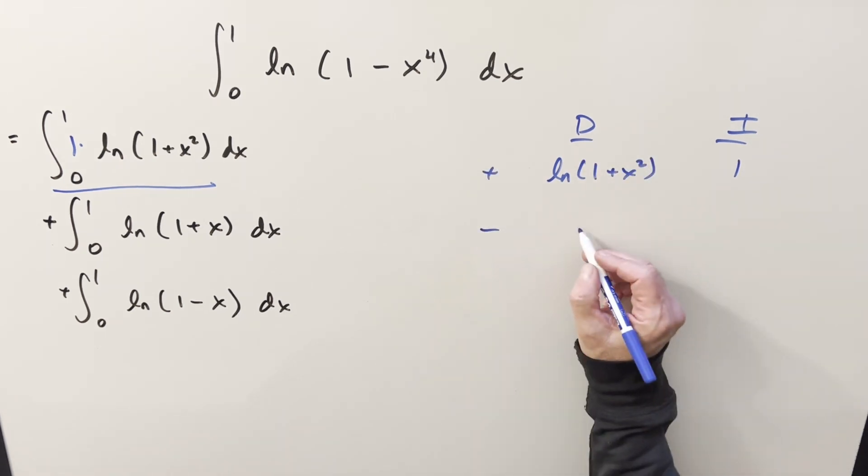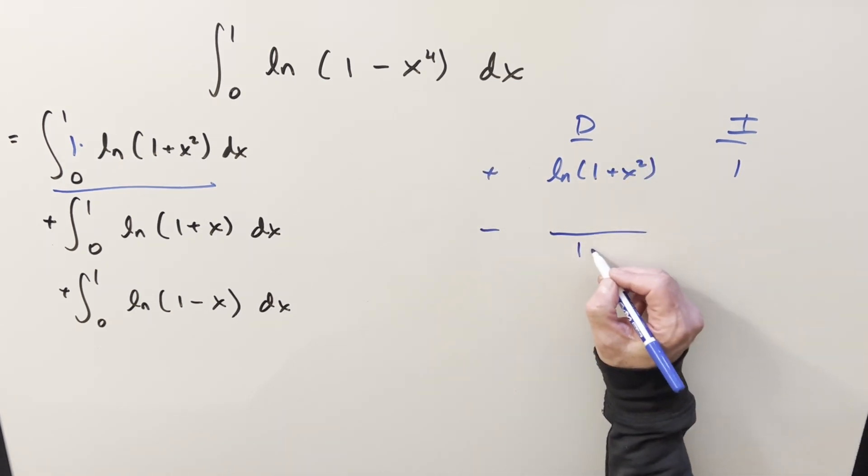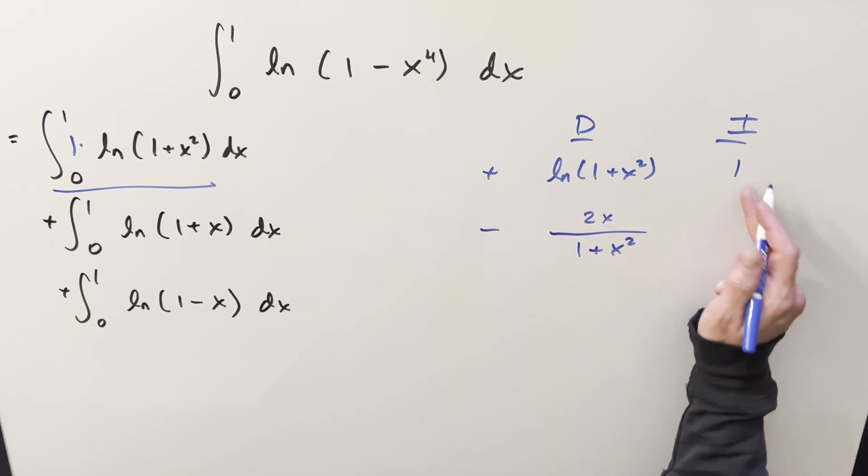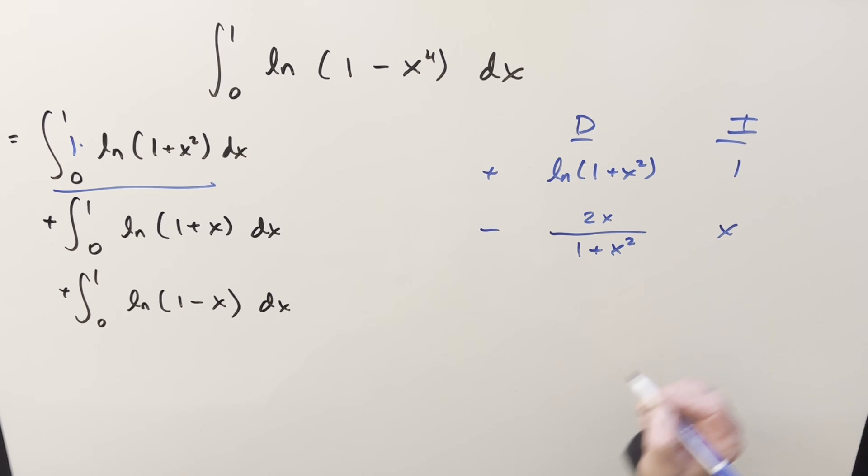Now differentiating this, we're going to get one over one plus x squared, then chain rule on x squared is going to bring a two x into the numerator, integrating one, that's just an x.